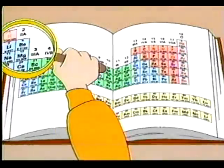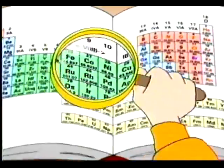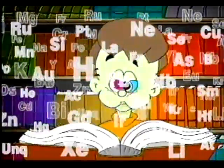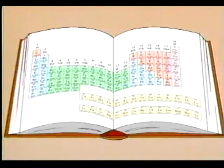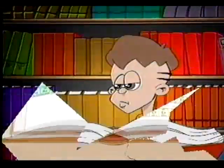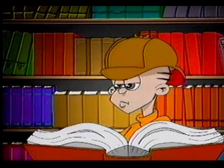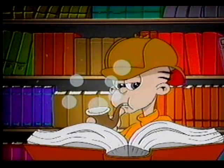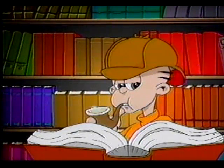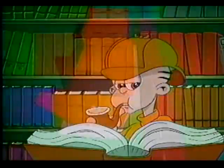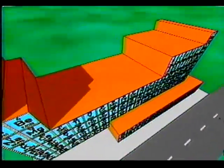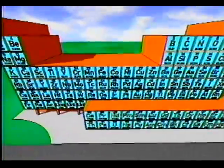Al intentar memorizar la tabla, Sherlock se aburrió tanto que hasta se mareó. Por lo que ha decidido utilizar su famoso olfato de sabueso, invencible para resolver casos misteriosos como este. La tabla periódica parece una gran casa con 7 pisos y 18 columnas, con más de 100 cuartos en donde habitan los elementos de acuerdo a su número atómico.